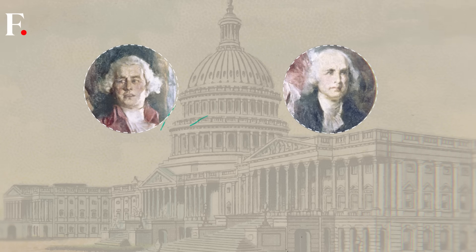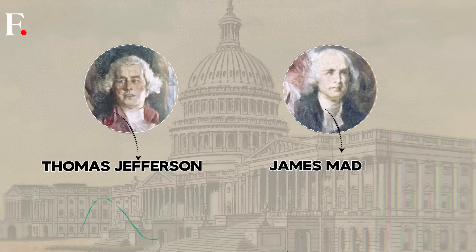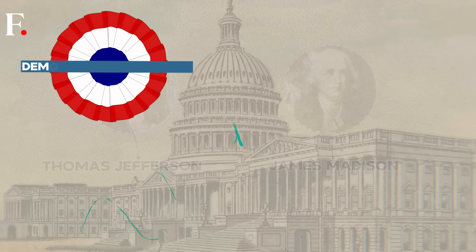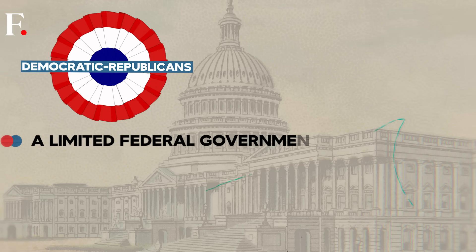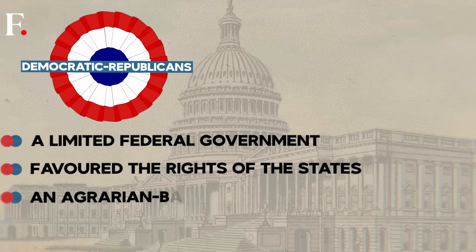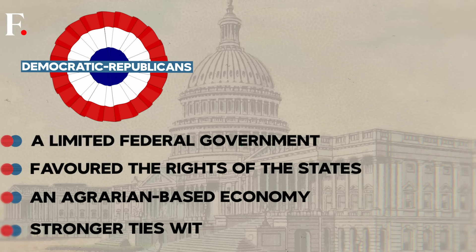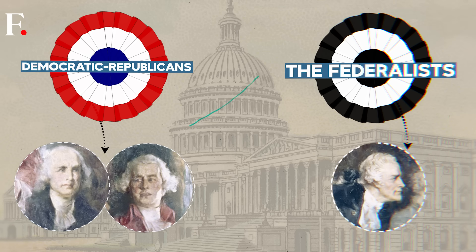Then there were the Democratic-Republicans, led by Thomas Jefferson and James Madison. They favored a limited federal government, the rights of the states, an agrarian-based economy, and stronger ties with France. This was the start of America's two-party system.